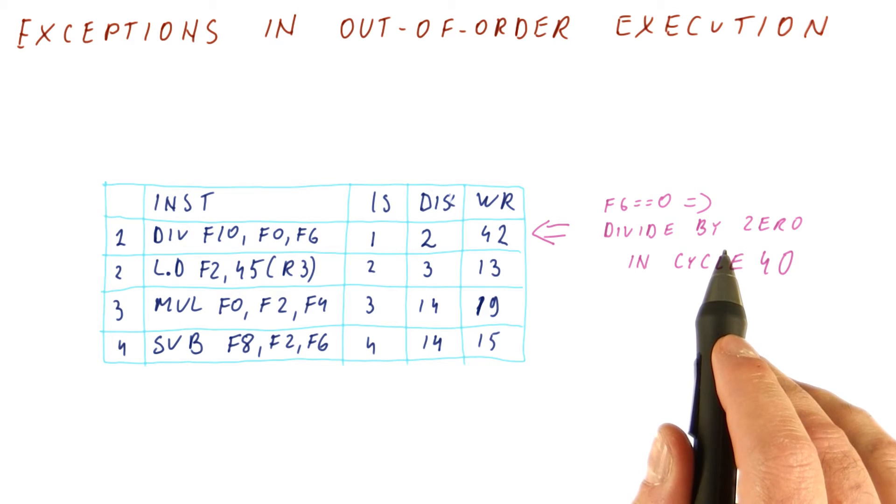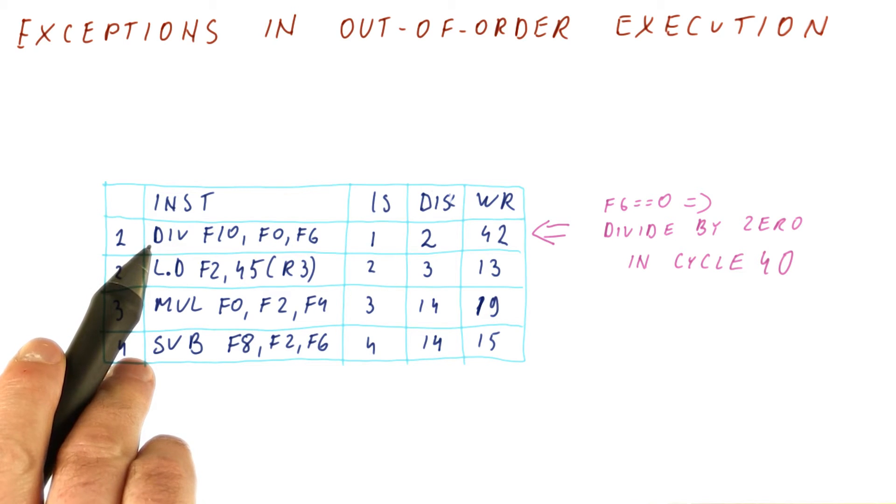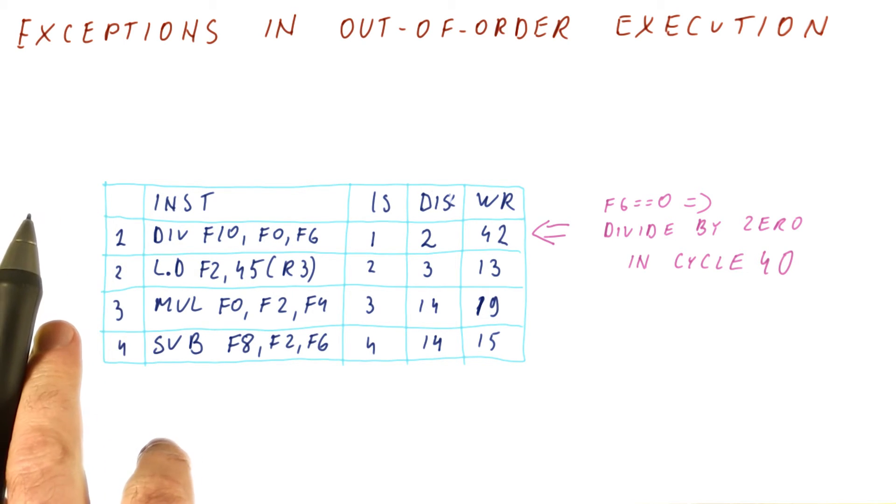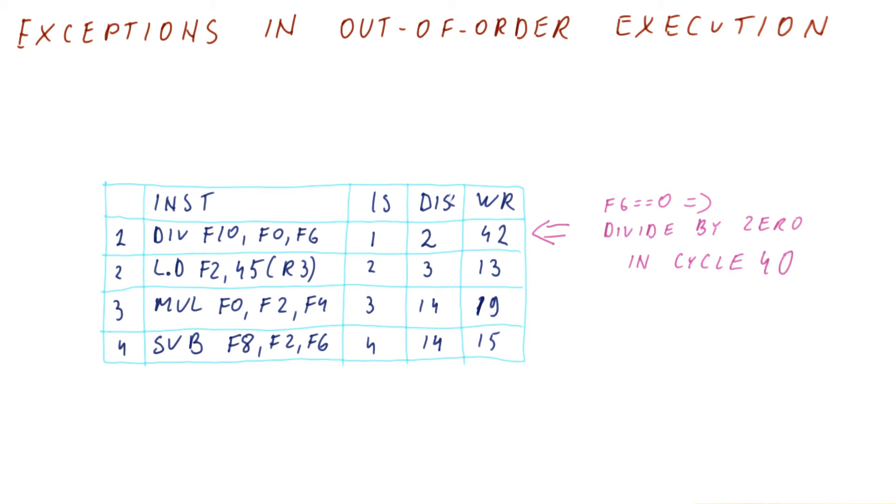So what should happen in this processor is the program counter for this instruction should be saved. We should jump to an exception handler. And then if the exception handler comes back, we should be back to this instruction and start executing from here.